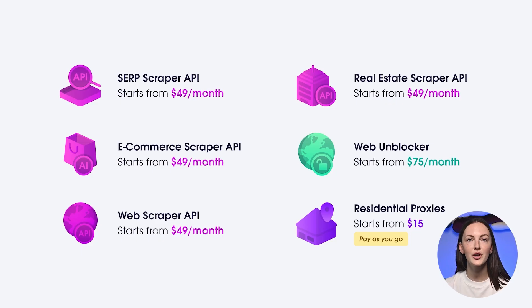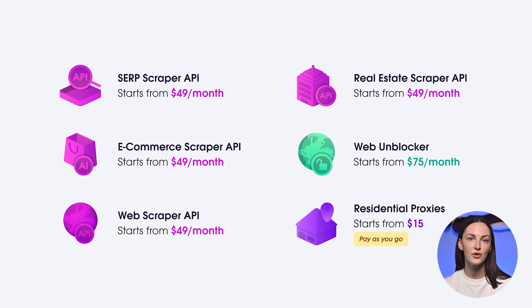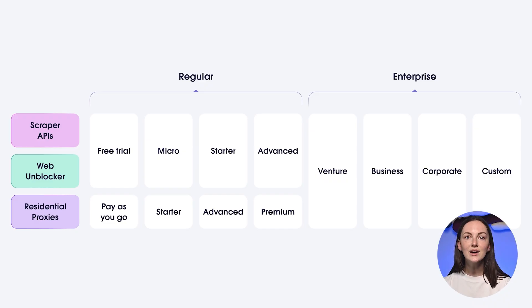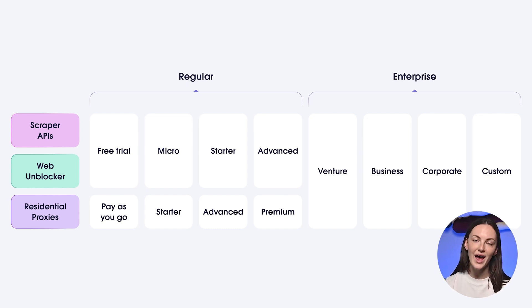Now that you are familiar with what our products do, let's take a look at the pricing. All Scraper APIs start at $49 a month, whereas WebUnblocker starts at $75 a month. It's important to know that for WebUnblocker we count traffic, whereas for Scraper APIs the number of results. With Residential Proxies, you can start with as little as $15 per gigabyte with our pay-as-you-go plan. All three products come with eight plans focusing on either regular or enterprise users, meaning companies of any size can find a suitable plan. I'll also include the pricing information in the description below so you can explore it further at your own convenience.